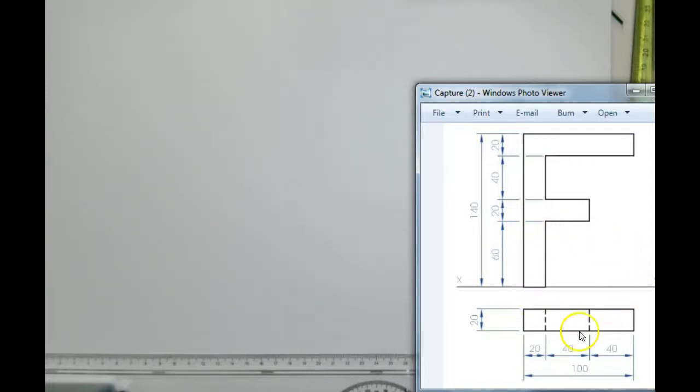So we're given the orthographic projection views of this F. As you can see, we have an elevation, we have a plan, we have our heights in our elevation, and the thicknesses in the plan are the exact same as the widths in the elevation.